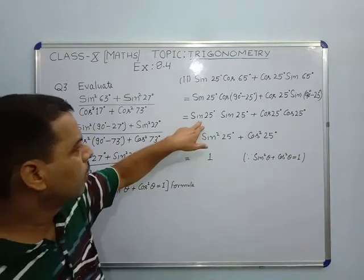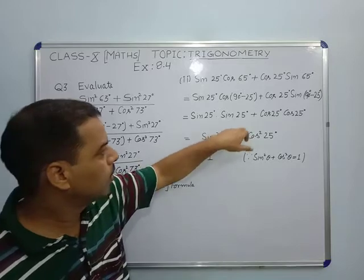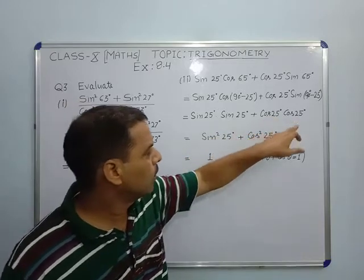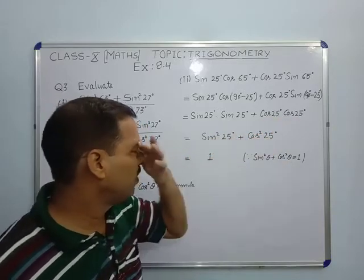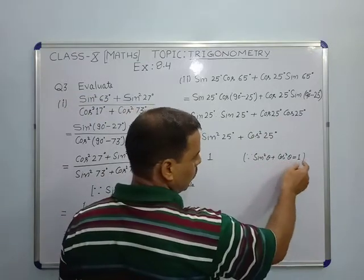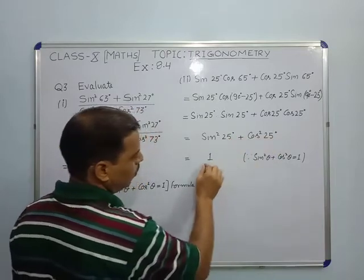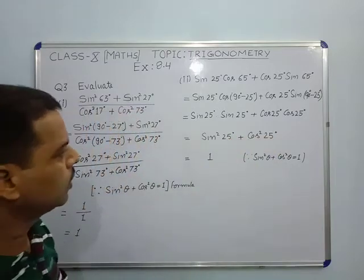Now sin 25° into sin 25° becomes sin²25°, plus cos 25° into cos 25° becomes cos²25°. And again, sin²θ + cos²θ = 1. So the value of sin²25° + cos²25° = 1. This is the answer of this question.